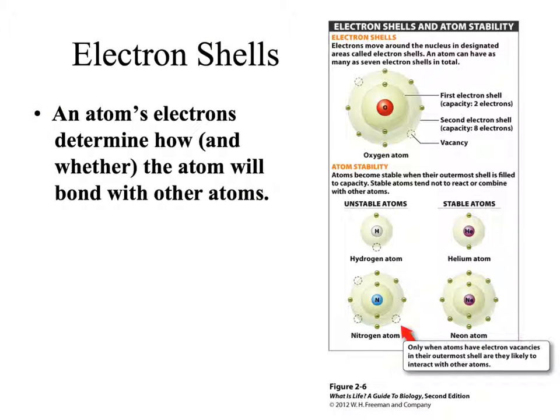Electrons are important because they determine how the atom will bond with other atoms, or if they will bond with other atoms. Electrons are located in orbitals around the nucleus. These orbitals are kind of like orbits of planets. Orbitals can also be called electron shells.